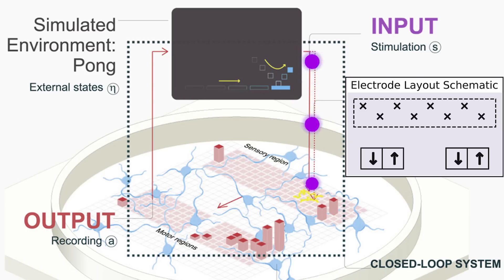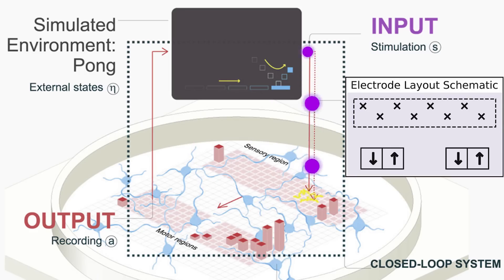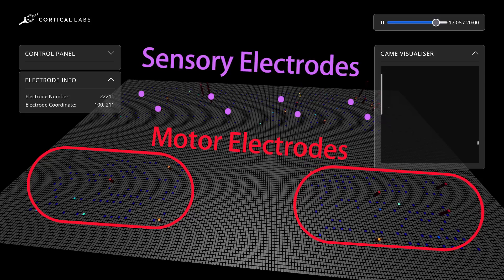DishBrain gets information about the pong world directly in the form of electrical stimulation from eight electrodes in this sensory part of the brain plate. It can move the paddle by activating these neurons, whose activity is picked up by electrodes in these motor areas. One side moves it up, one side moves it down. But nobody teaches it the rules of pong. So how does it learn?